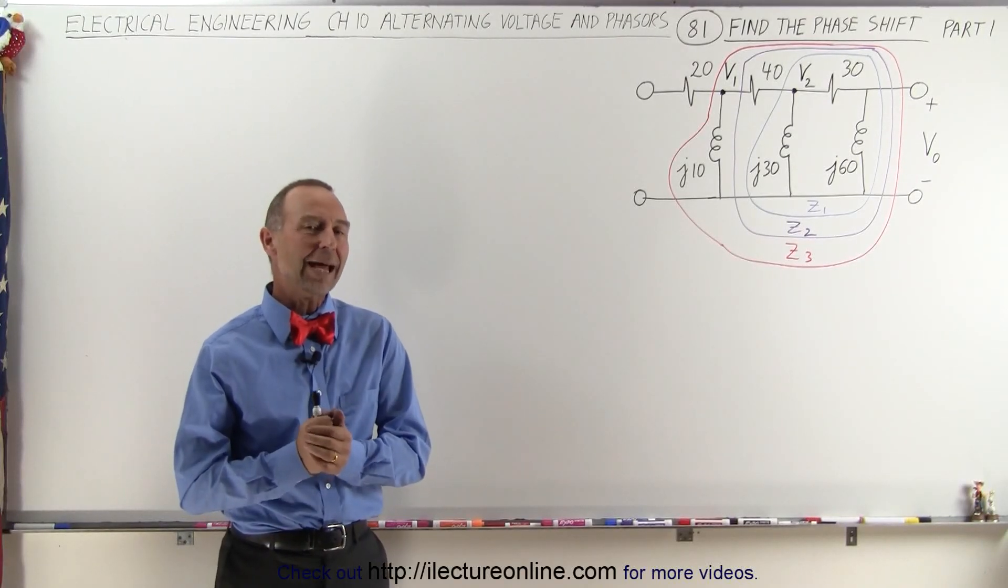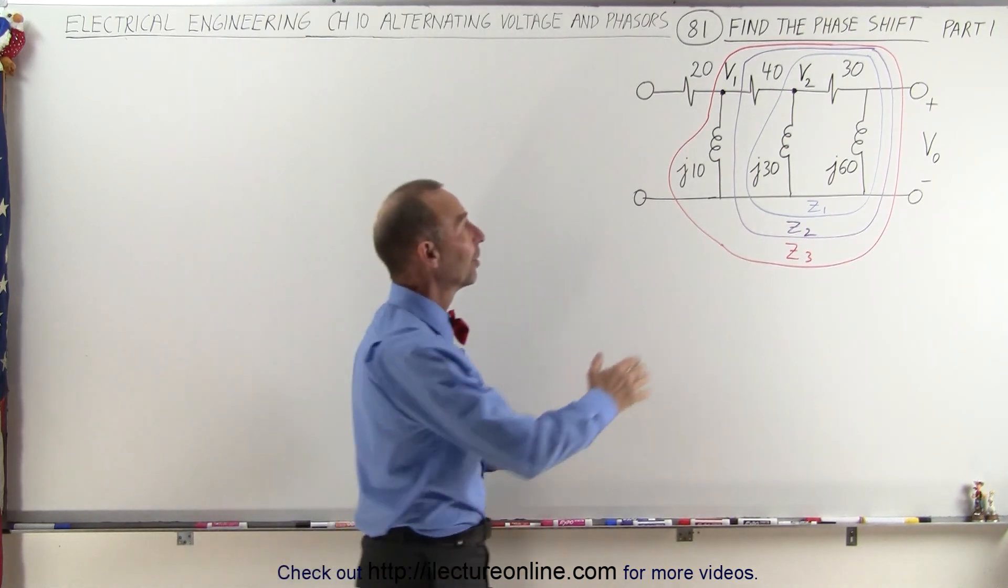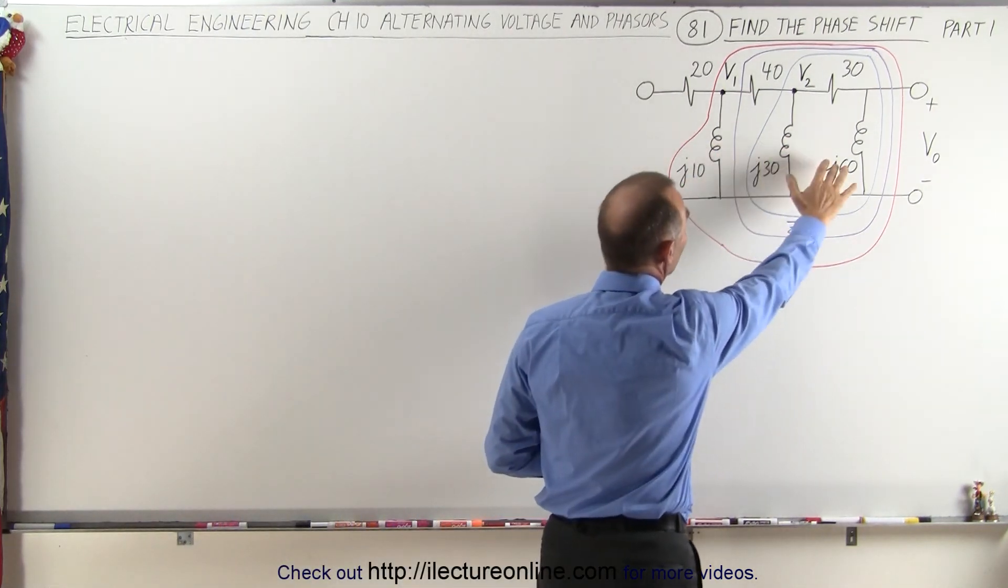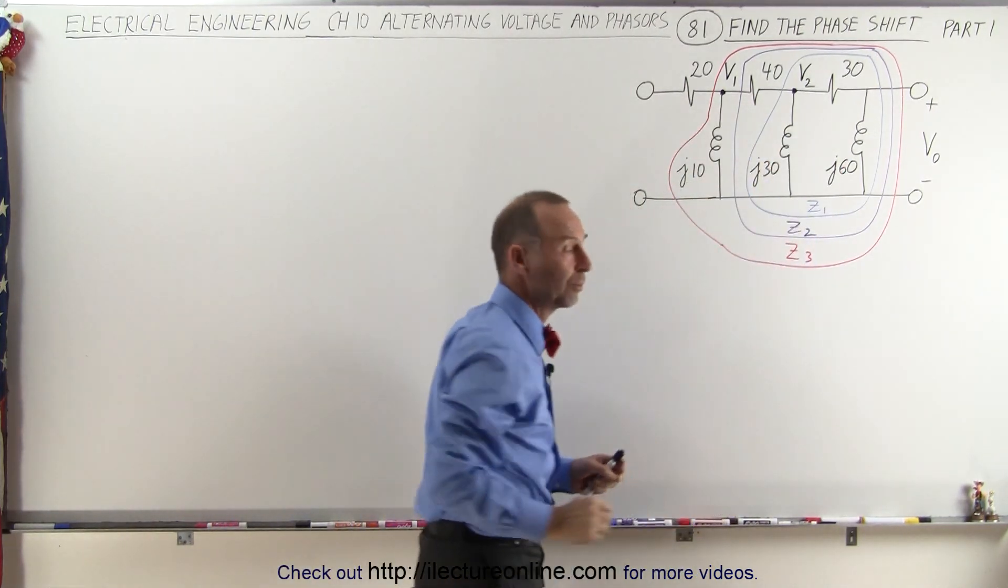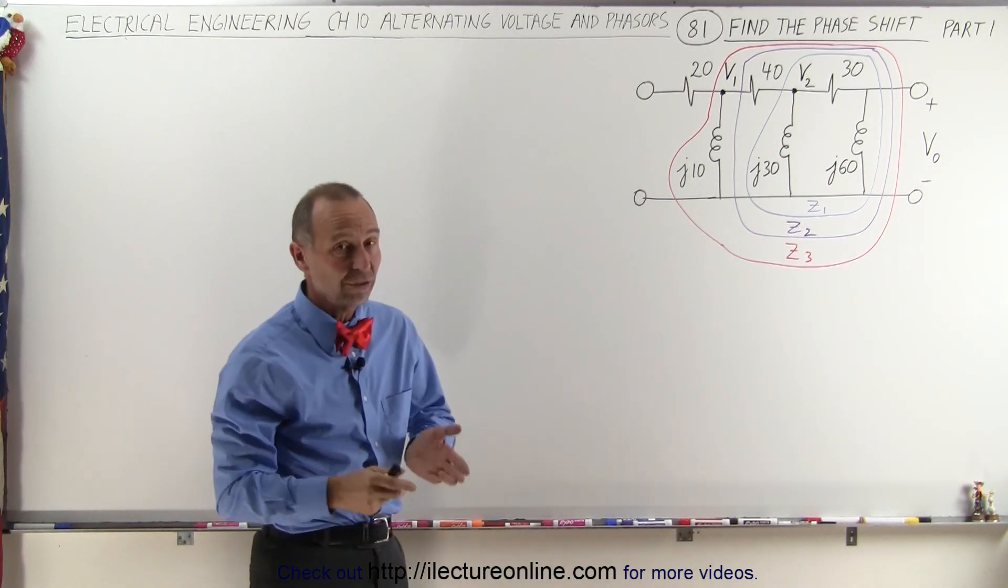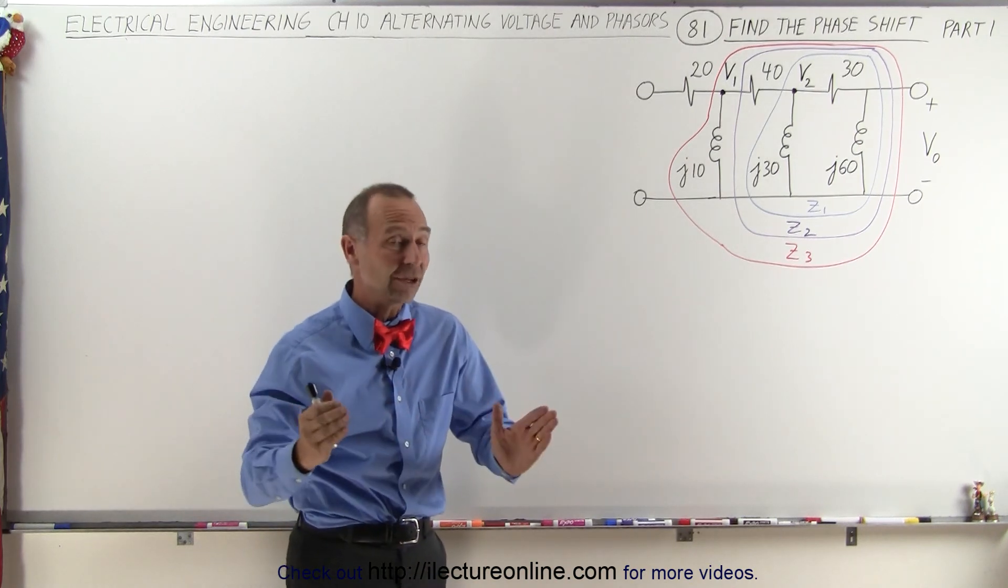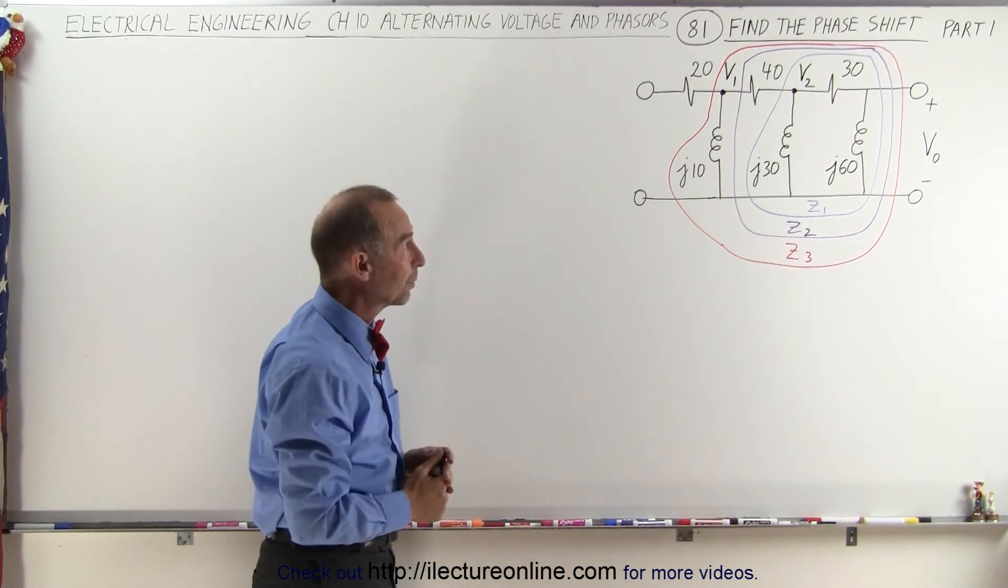Welcome to Electronline. Now we're going to find the phase shift for this circuit right here that has three branches, three inductors, and three resistors. We've done phase shifters with just one inductor and one resistor, phase shifters with two inductors and two resistors, but how do you do it when you have three inductors, three branches, and three resistors up there?